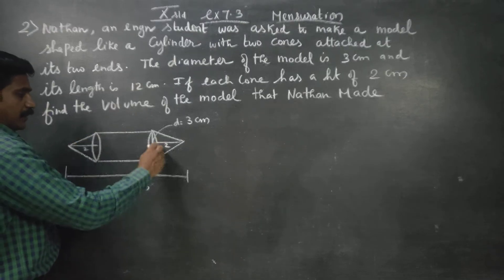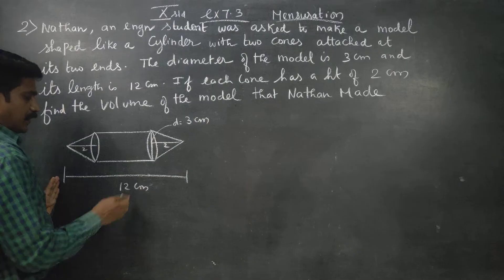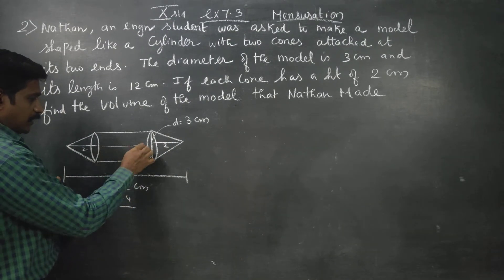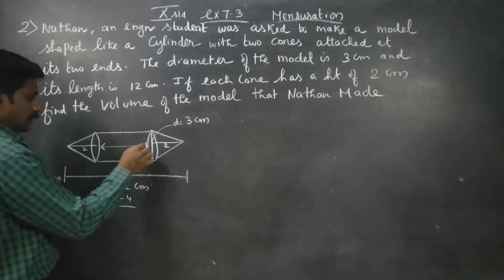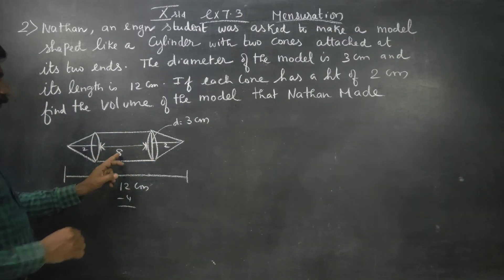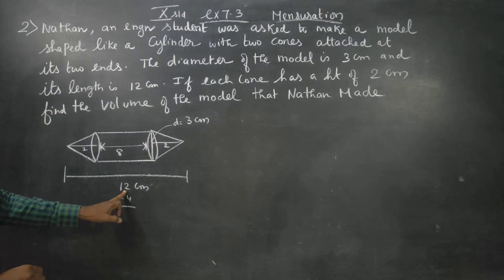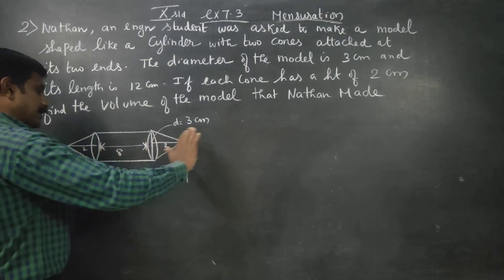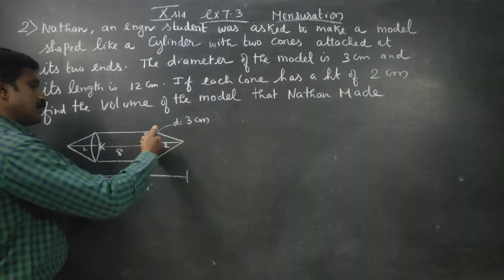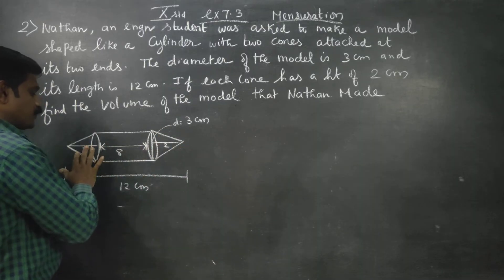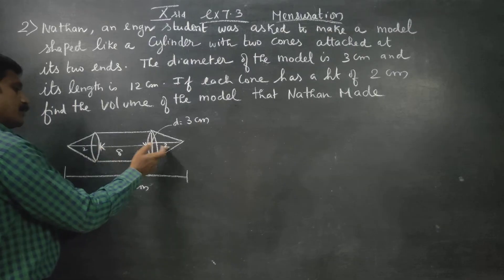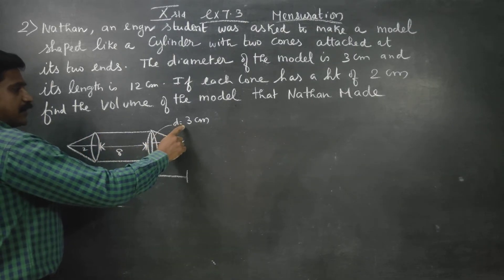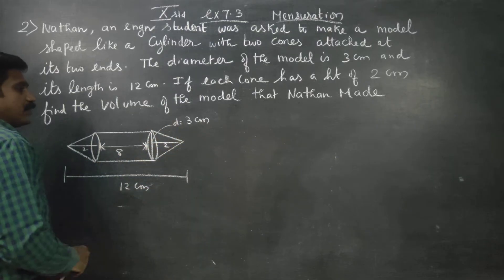First, let's find the height of the cylinder. Each cone has height 2 centimeters, so 2 plus 2 is 4. The total length is 12, so the cylinder height is 12 minus 4 equals 8 centimeters. Check: 8 plus 2 is 10, plus 2 is 12. Correct.